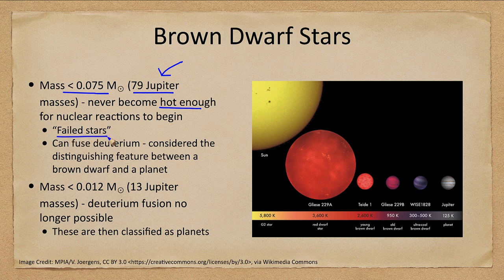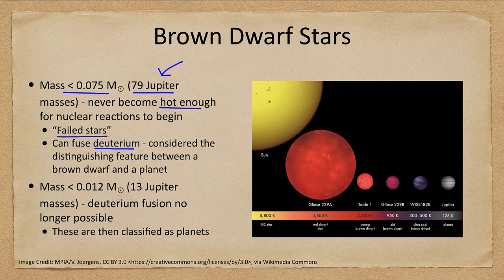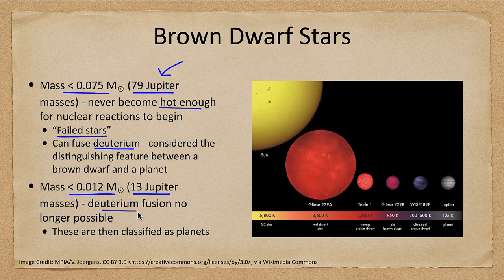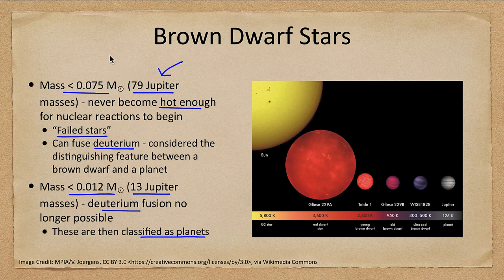These are what we call failed stars and they confuse deuterium, which is a heavy form of hydrogen, but they cannot fuse hydrogen itself. Now if we go to even lower masses, less than 0.012 solar masses or 13 Jupiter masses, then deuterium fusion is no longer possible and the object is classified as a planet. So things 13 Jupiter masses or less would be a planet, between 13 and 79 would be a brown dwarf, and 79 or greater Jupiter masses would then be a star.